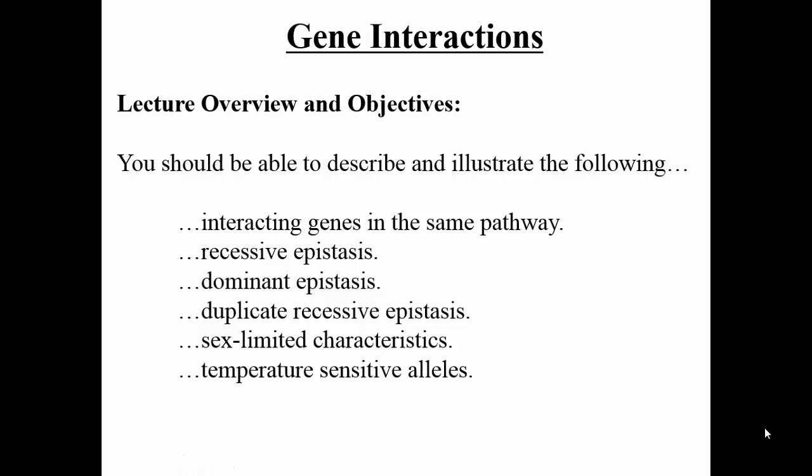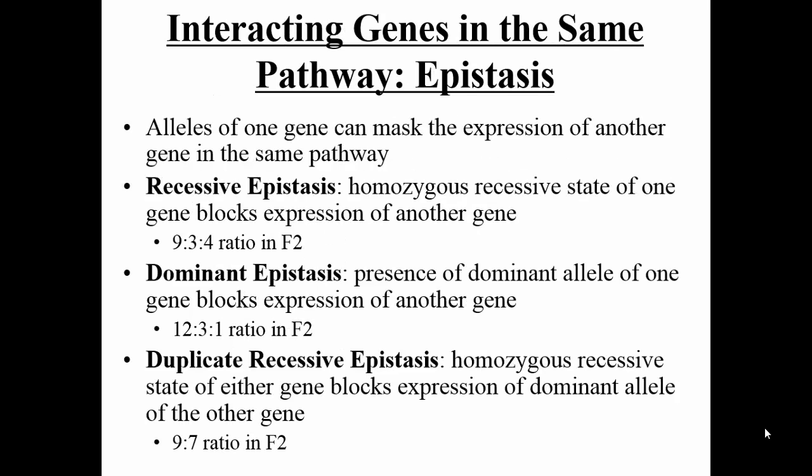In today's lecture, we're going to talk about gene interaction. Whenever we have genes interacting together in the same pathway, it's something we call epistasis. Epistasis means that the alleles of one gene can mask expression of the alleles of another gene. The different types we're going to talk about today are recessive epistasis, dominant epistasis, and duplicate recessive epistasis.